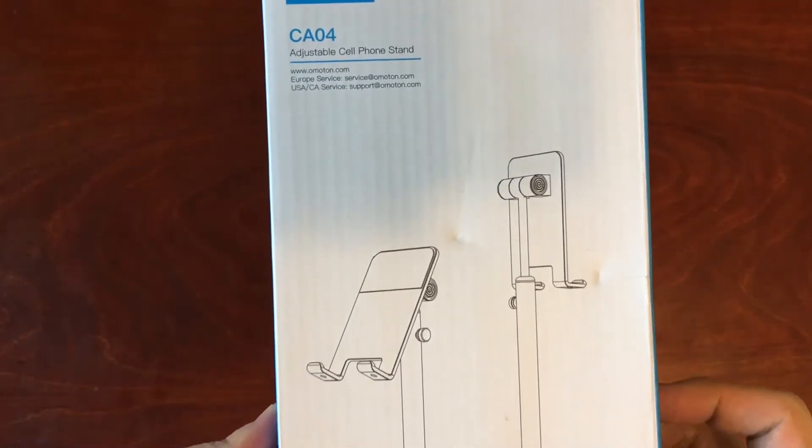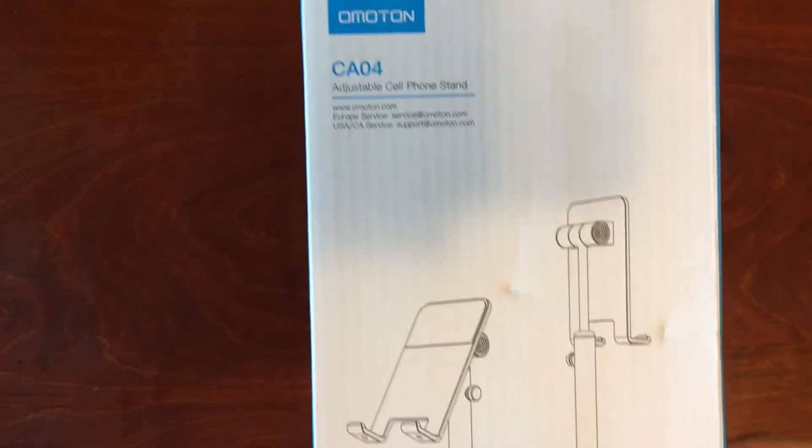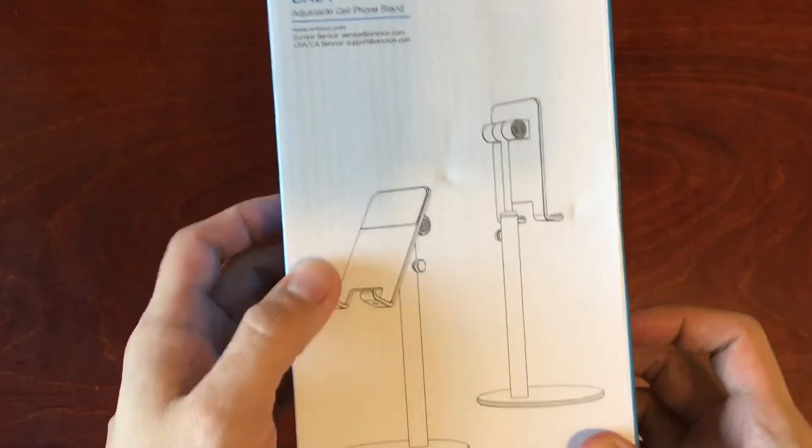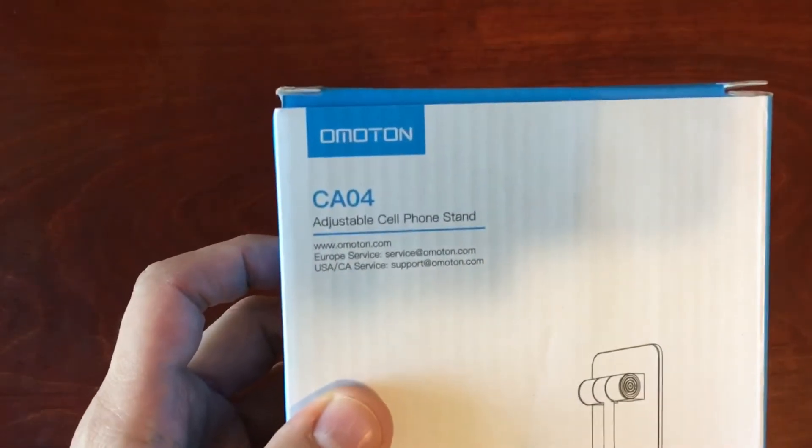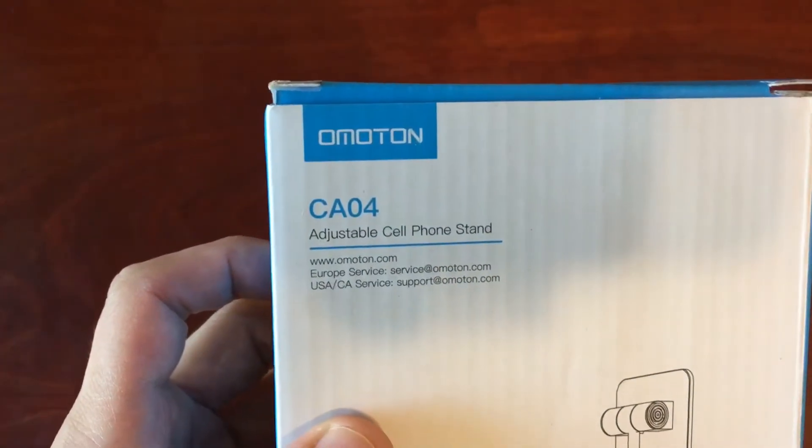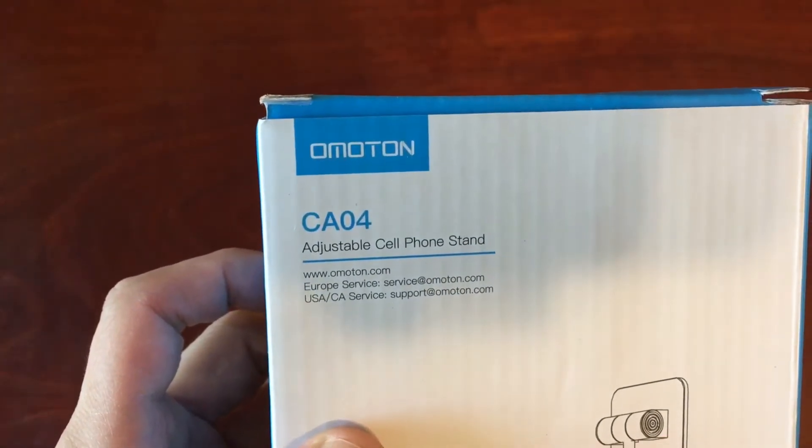So let's take a look at the box together here. At the very front you have a picture of the product as well as the name of the product. It also gives you the email address as well as the website.